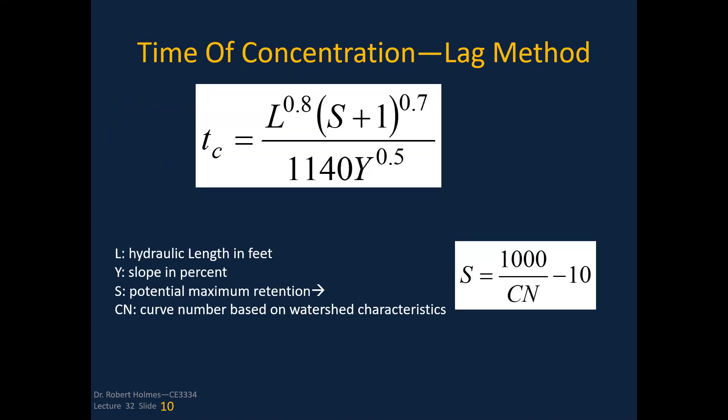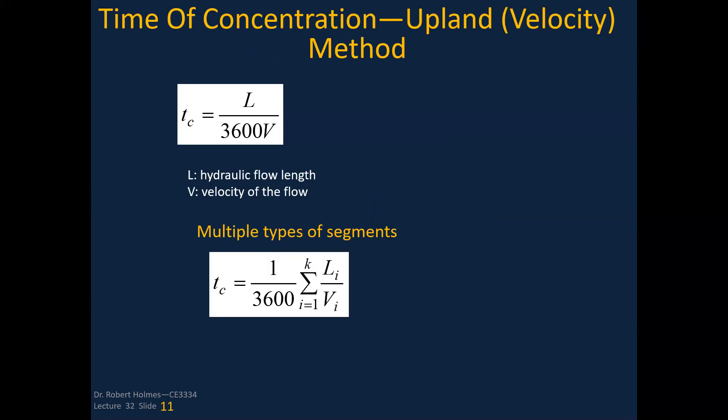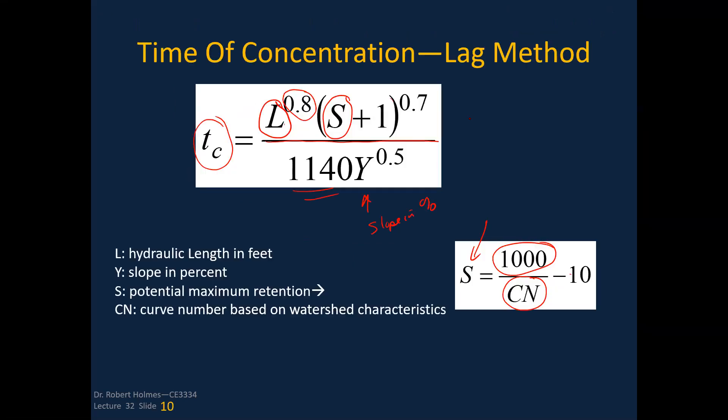If I use the lag method, the time of concentration T_c is equal to the hydraulic length of the watershed, that's in feet, signified by L, multiplied, take it to the 0.8 power. Then you multiply that by the potential maximum retention. This is curve number hydrology. That potential maximum retention storage is 1000 divided by the curve number minus 10. You add that to one and take it to the 0.7 power. Then you divide that by 1140 times y to the 0.5, where this y is the slope in percent, slope of the watershed.